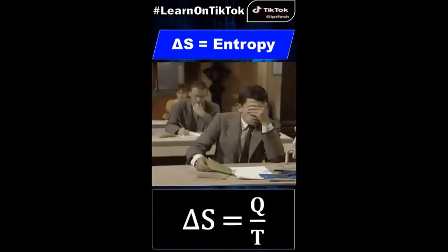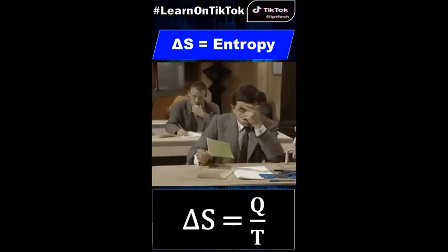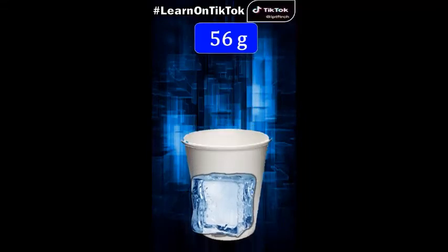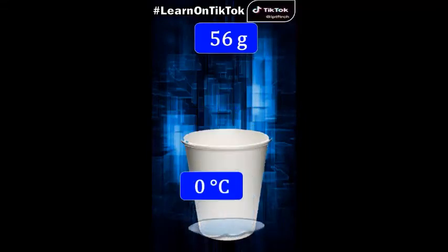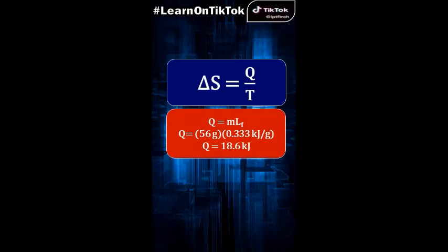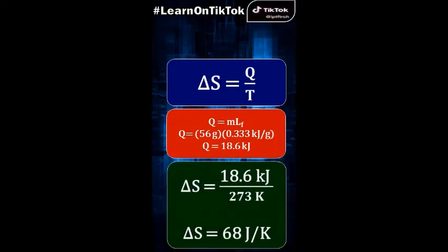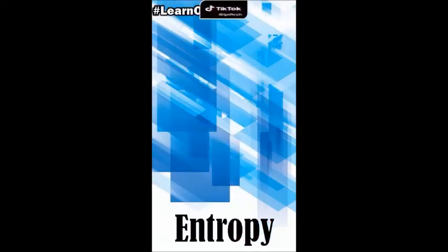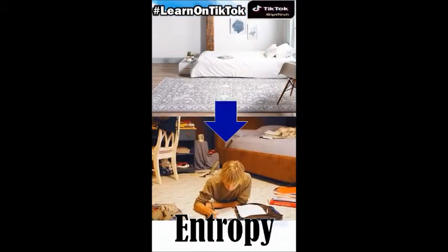The change in entropy during a process of a system is equal to the amount of heat added to the system by a reversible process at constant temperature, given by the equation where temperature is in Kelvin. For example, an ice cube of mass 56 grams is taken from storage at zero degrees Celsius and placed in a paper cup. After a few minutes the ice cube melts at zero degrees Celsius. The change in entropy equals heat divided by temperature, where heat equals mass times the latent heat of fusion L.